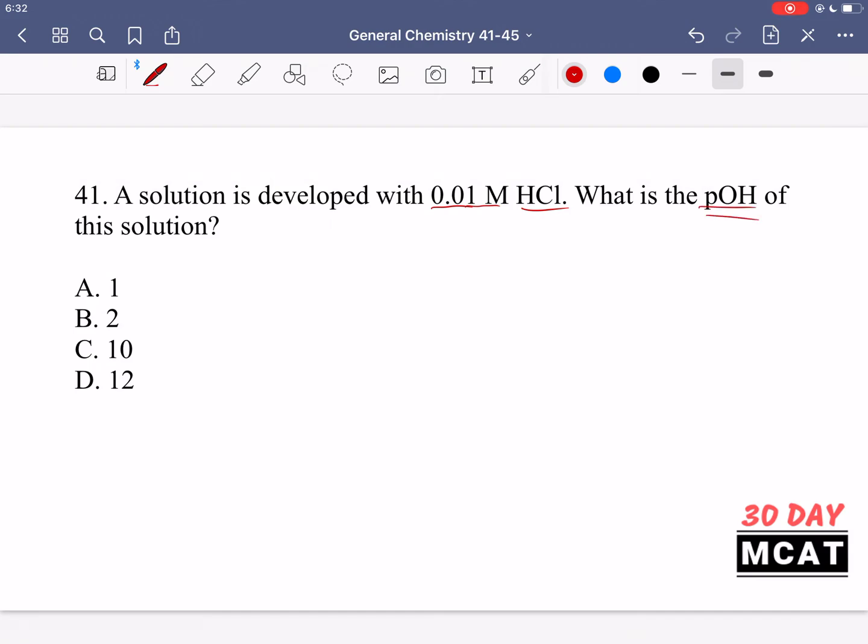You can just directly look for pOH or you can look for pH which is equal to the negative log of the concentration of protons that we have. We know that HCl is a strong acid so it's going to fully dissociate. So the concentration of HCl is the same as a concentration of H plus and so we just plug that in.